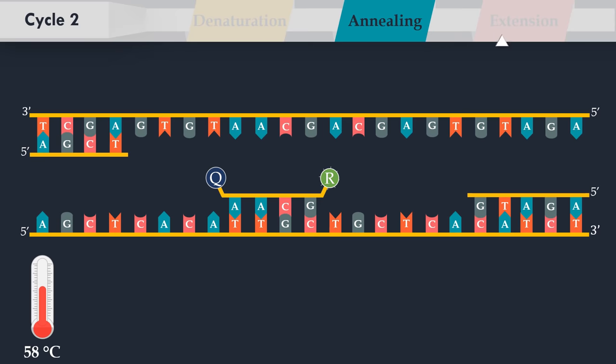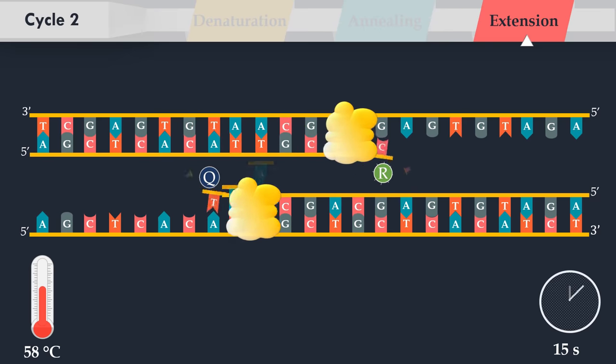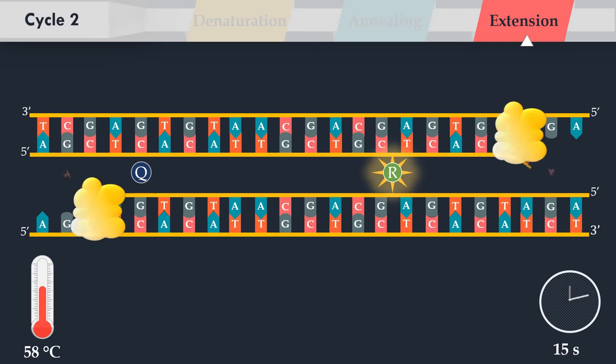In the extension step, DNA polymerase synthesizes new strands. When the polymerase reaches a Taqman probe, its endogenous five-prime nuclease activity cleaves the probe, separating the dye from the quencher.